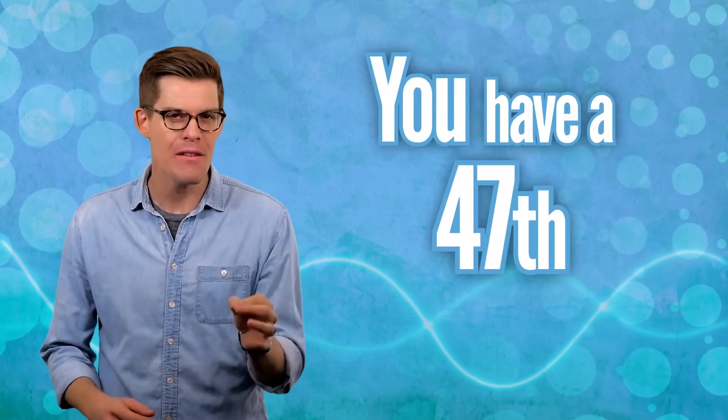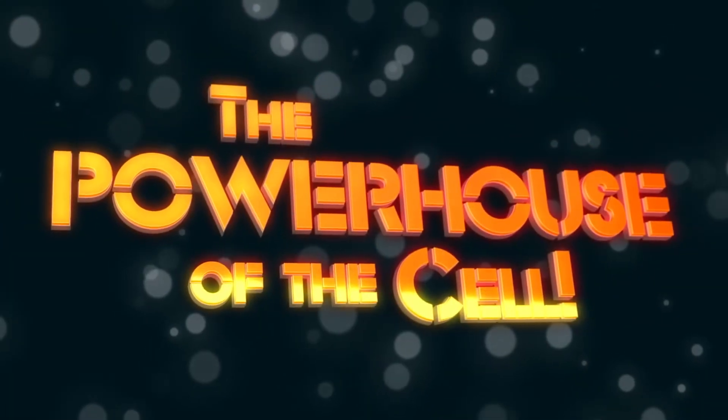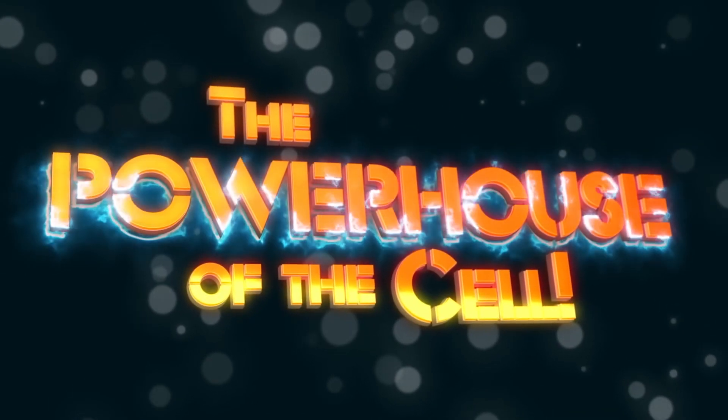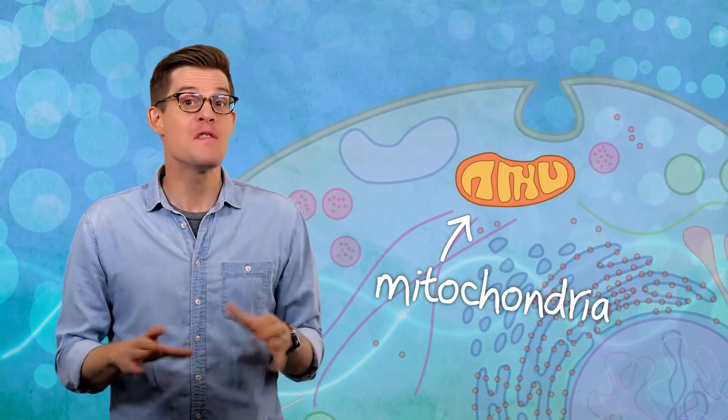You have a 47th chromosome. It lives in mitochondria. The powerhouse of the cell! Okay, so we're doing that again. Mitochondria used to be free swimming. They have their own genetic material. Unlike your other 46 chromosomes, there's no shuffling when it's passed between generations. And what's more,